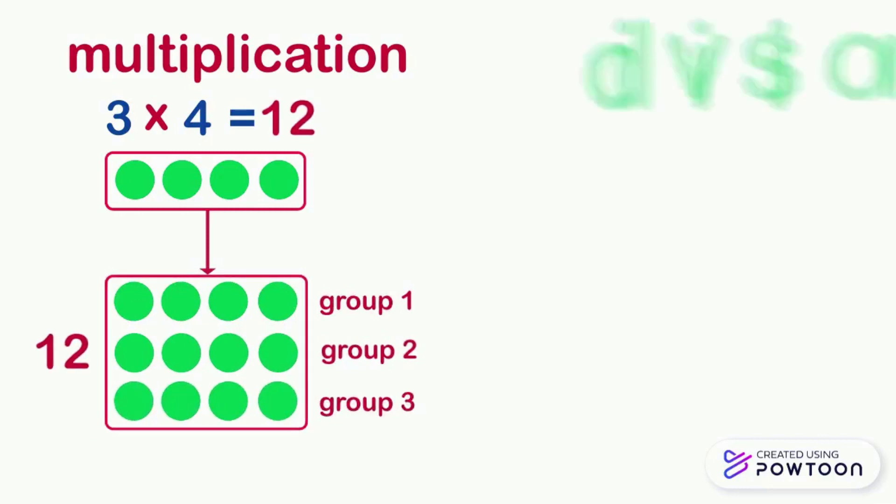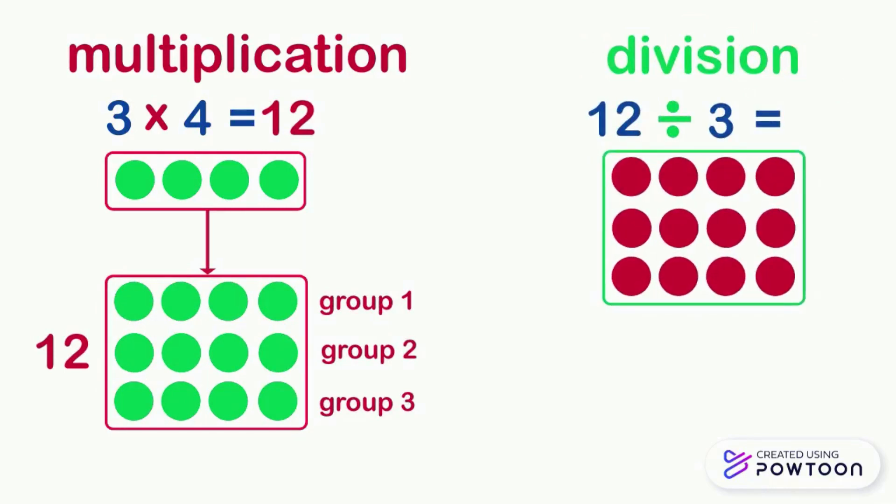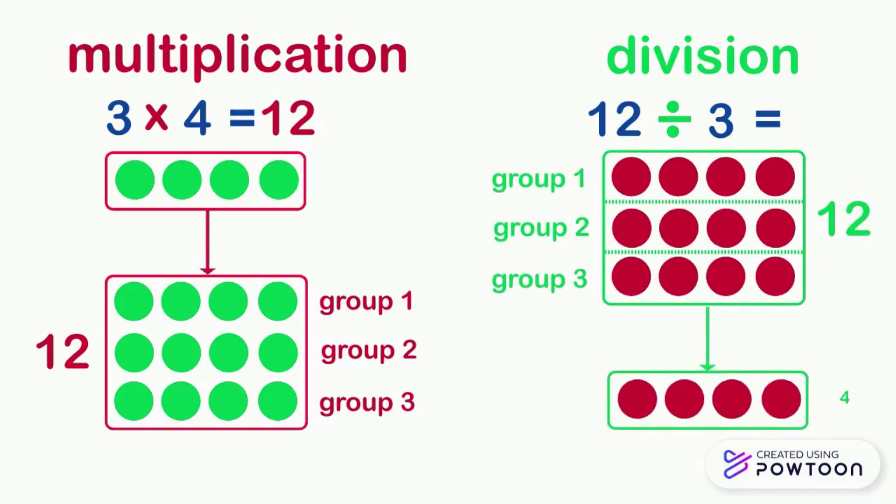But when we make a division, it is the inverse of multiplication, which means we have a total amount of objects and we share it in several equal groups and we see how many objects we have in each group. We have 12 pawns and we have divided them into 3 equal groups, so we get 4 pawns per group. So 12 divided by 3 equals 4.